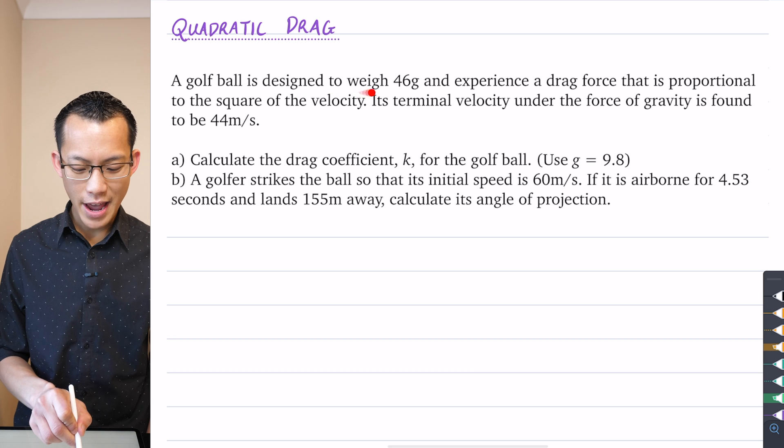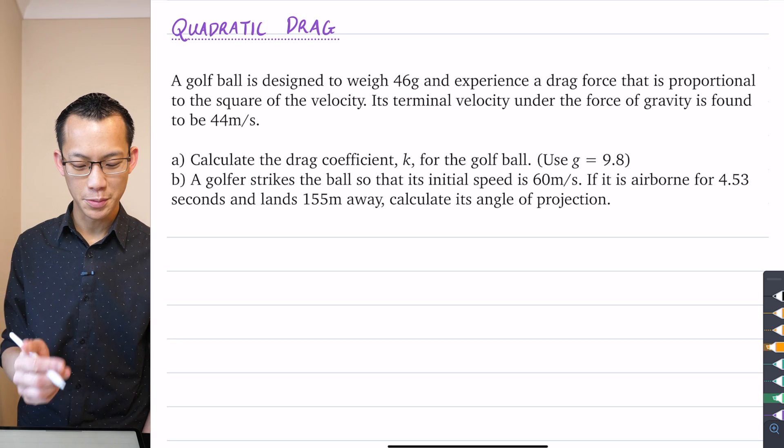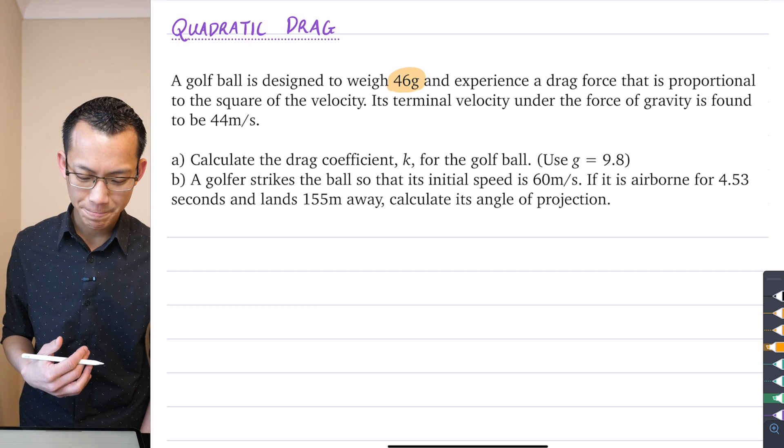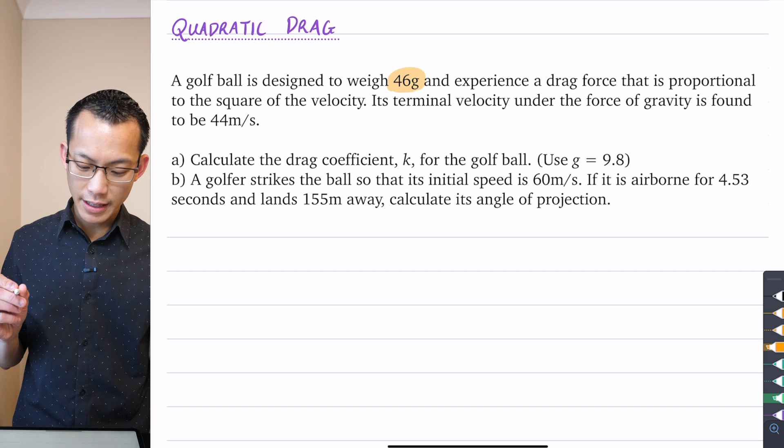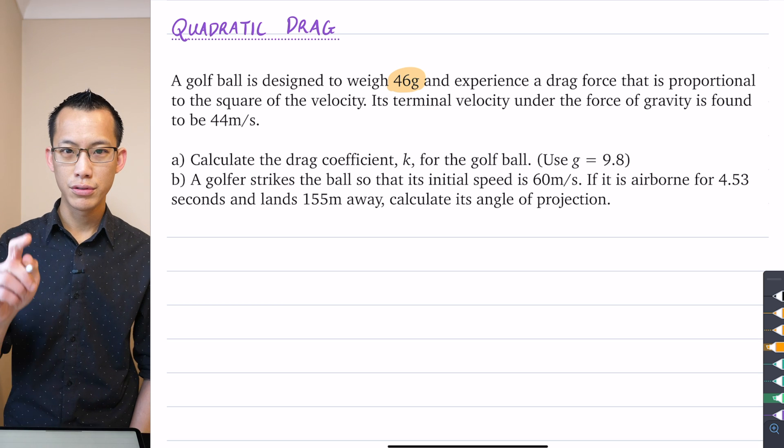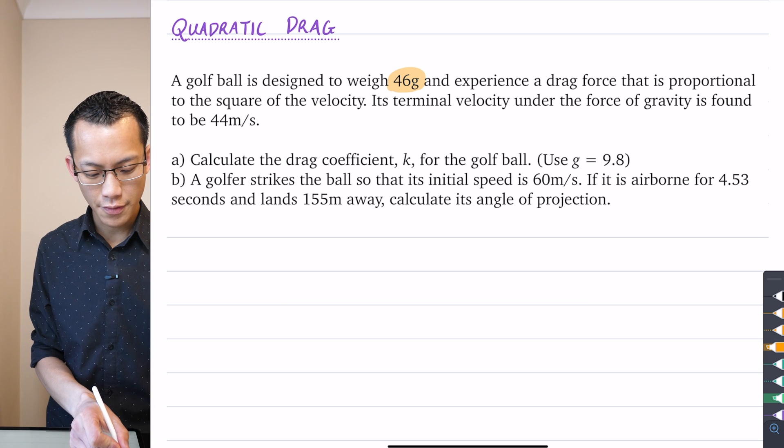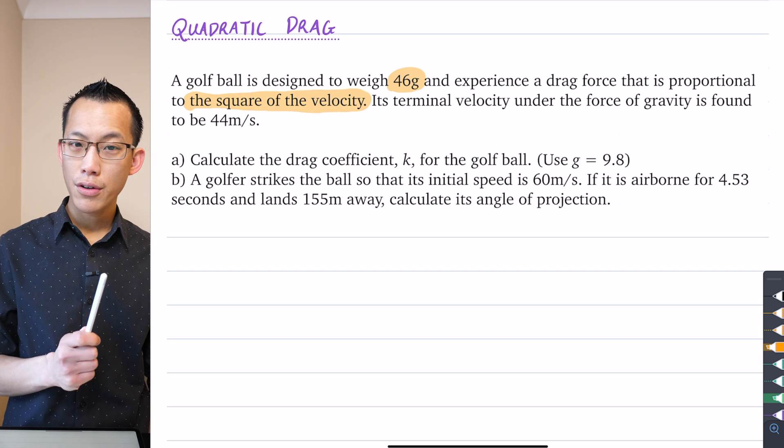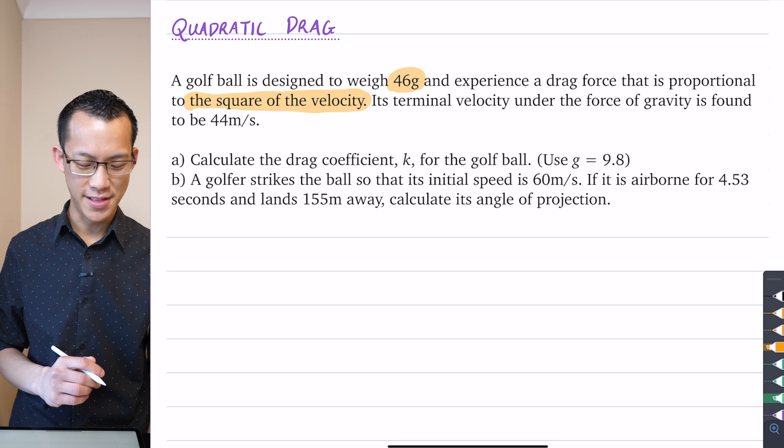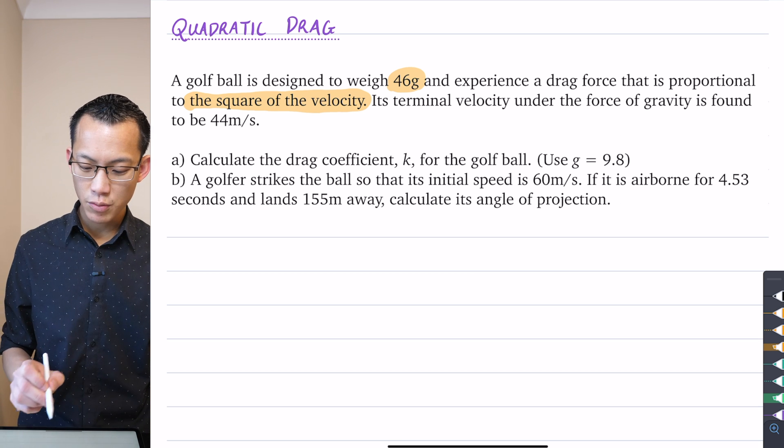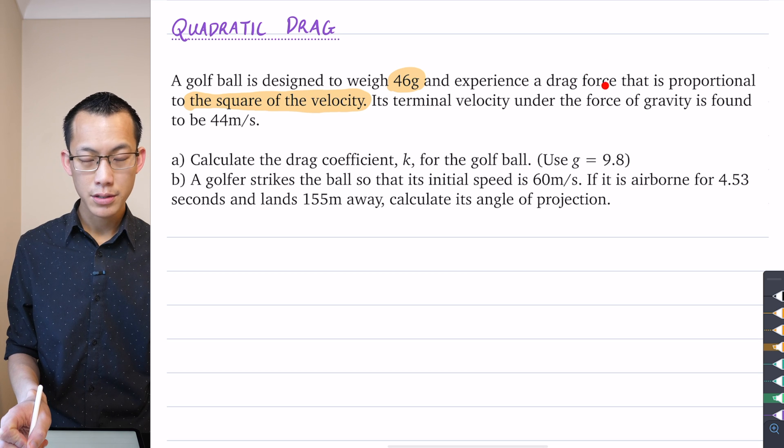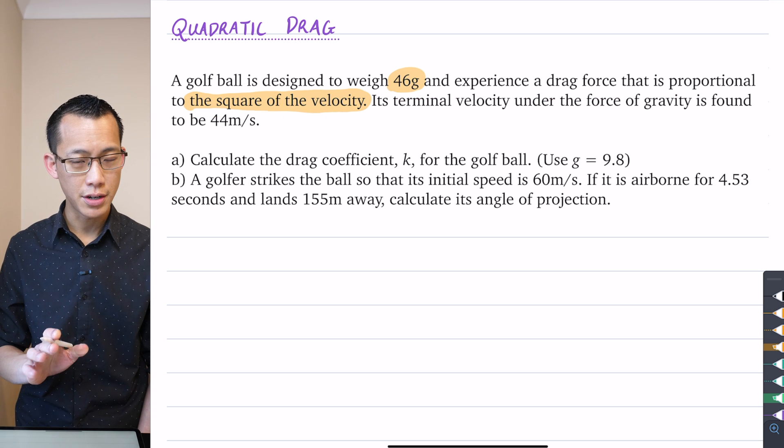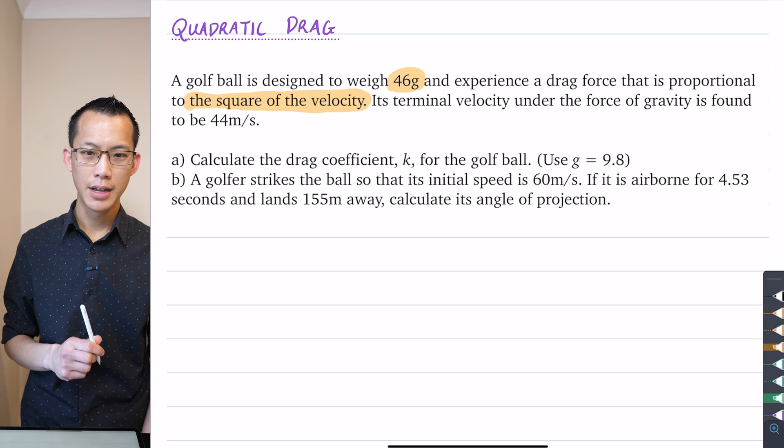A golf ball is designed to weigh 46 grams. Let's highlight the pieces of information that are vital for us to write down. It's designed to experience a drag force that is proportional to the square of the velocity. I particularly want you to note the drag force - not the acceleration, the force - is proportional to the square of velocity, and there's no mention of mass. That's important, we'll come back to it later.